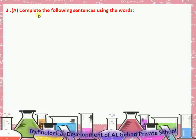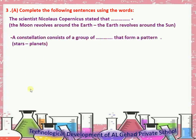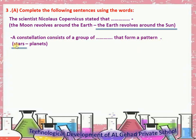Complete the following sentences using the given words. Number 1: The scientist Nicolaus Copernicus states that the earth revolves around the sun. Number 2: A constellation consists of groups of stars that form a pattern.